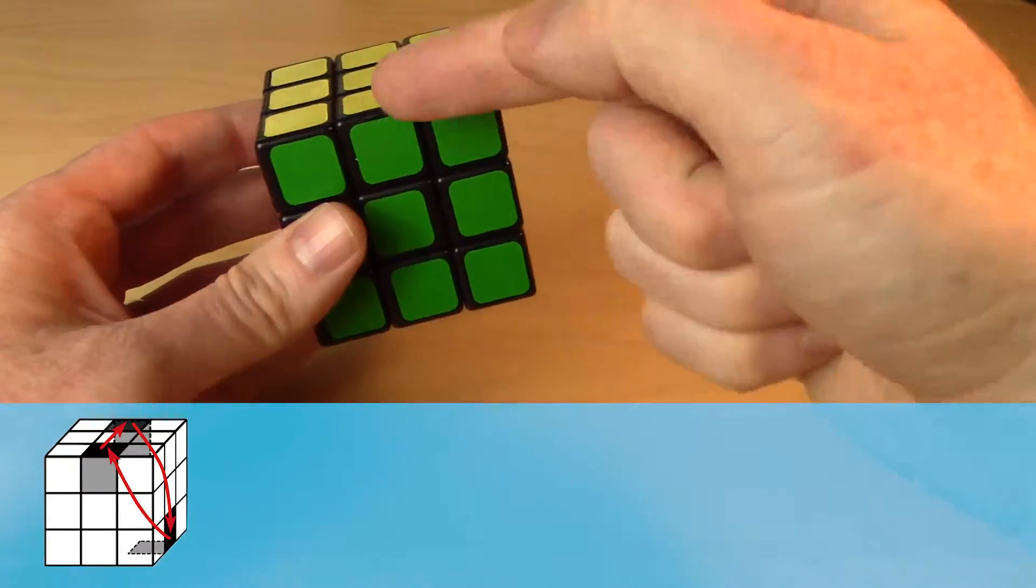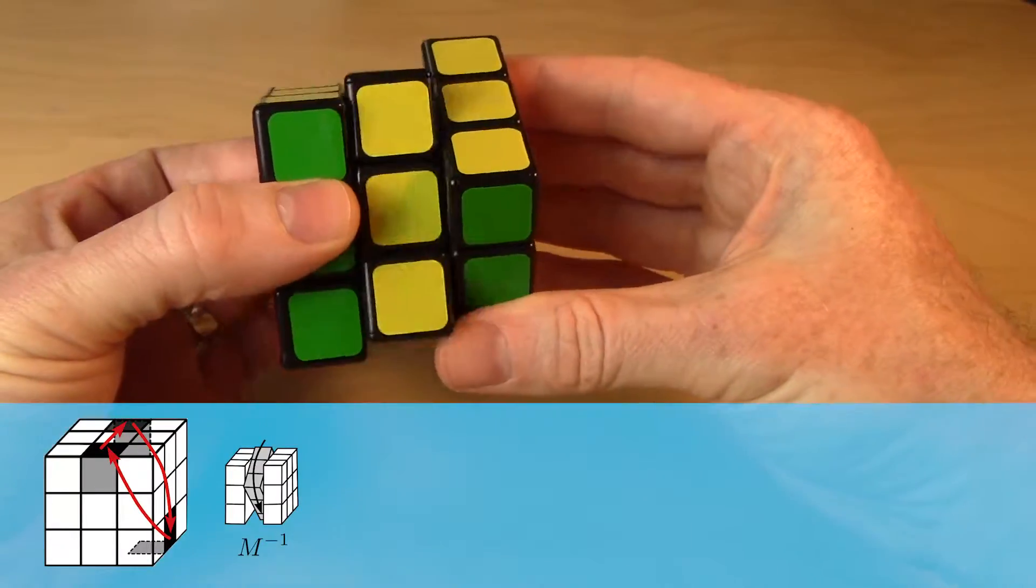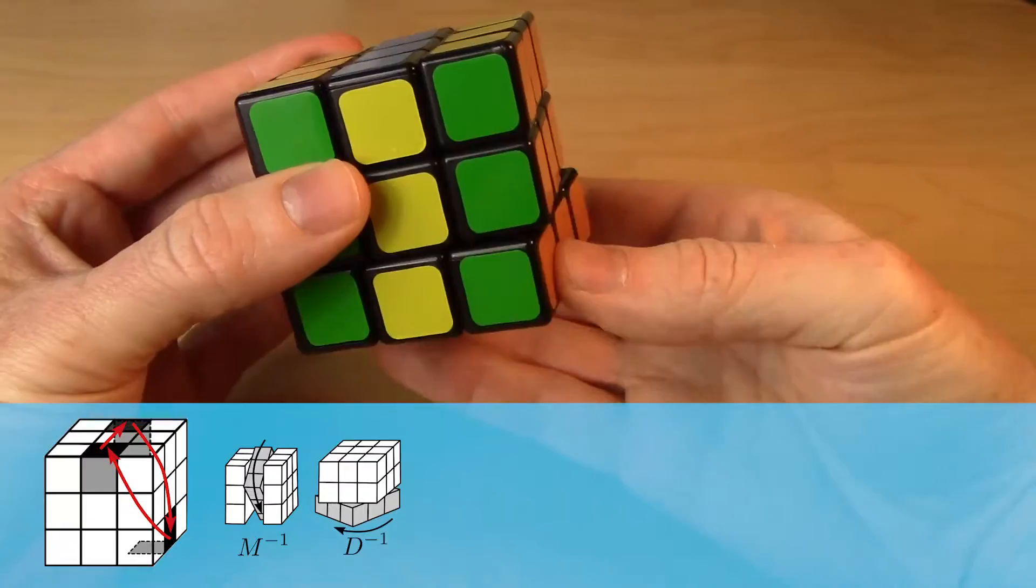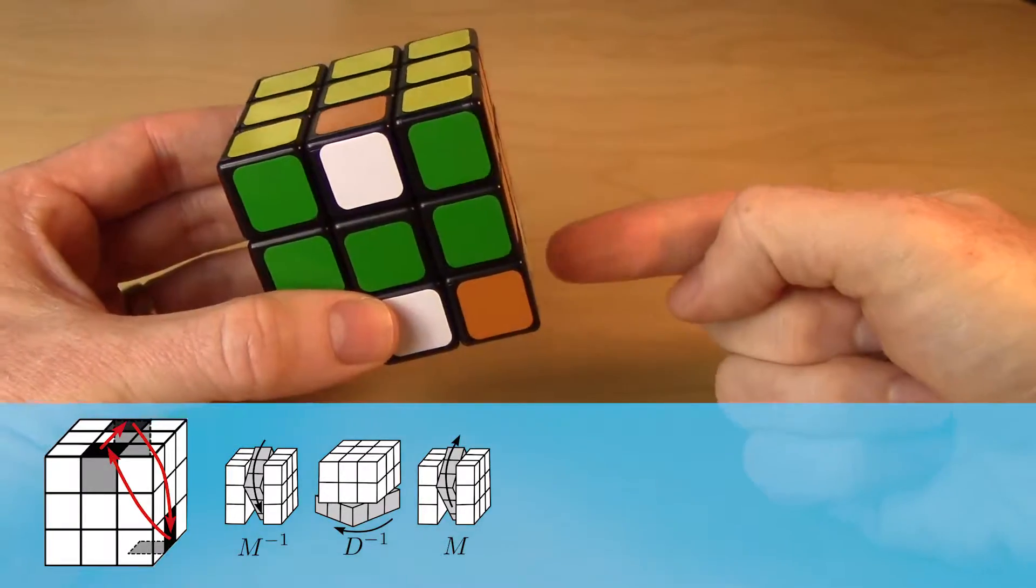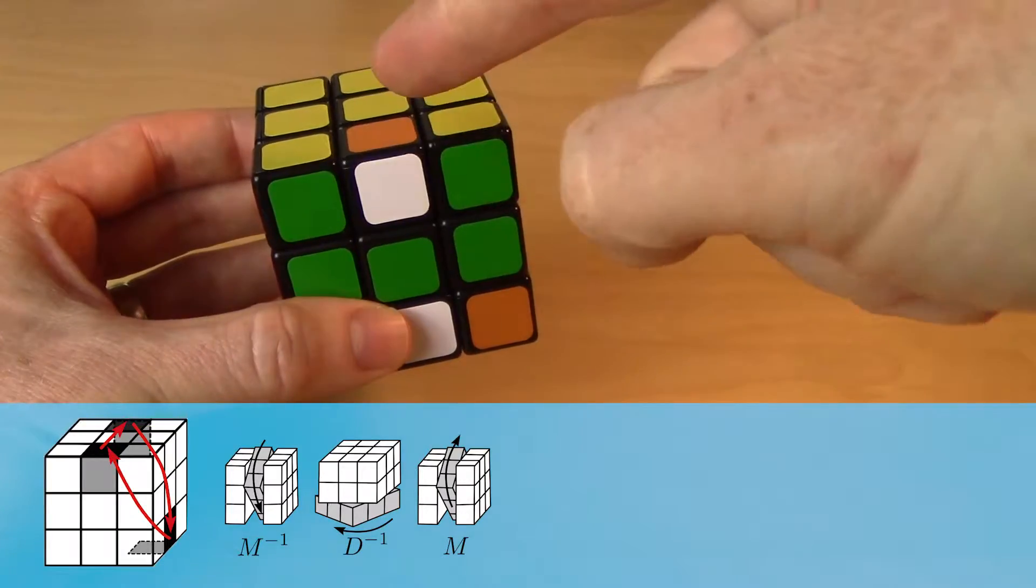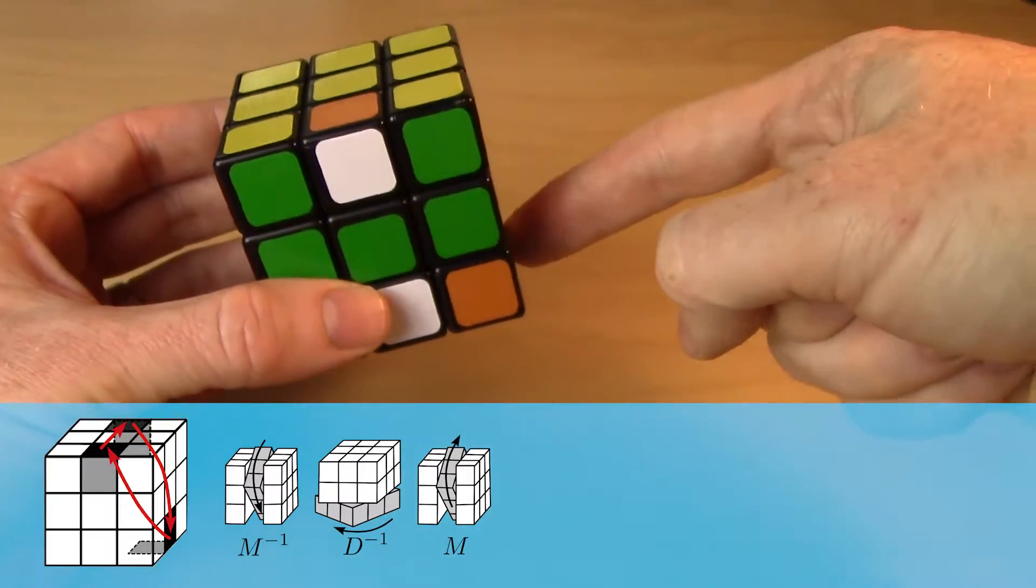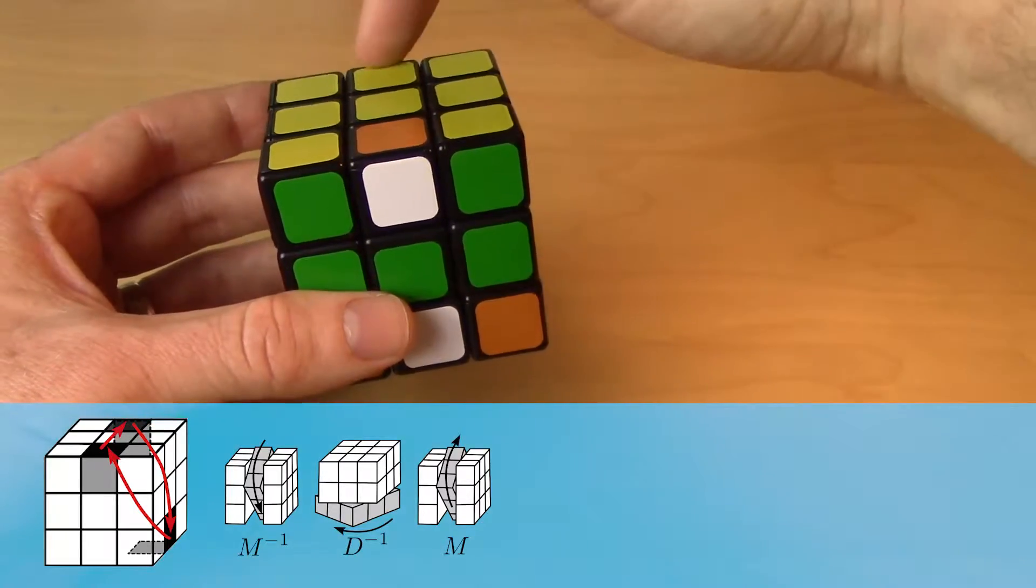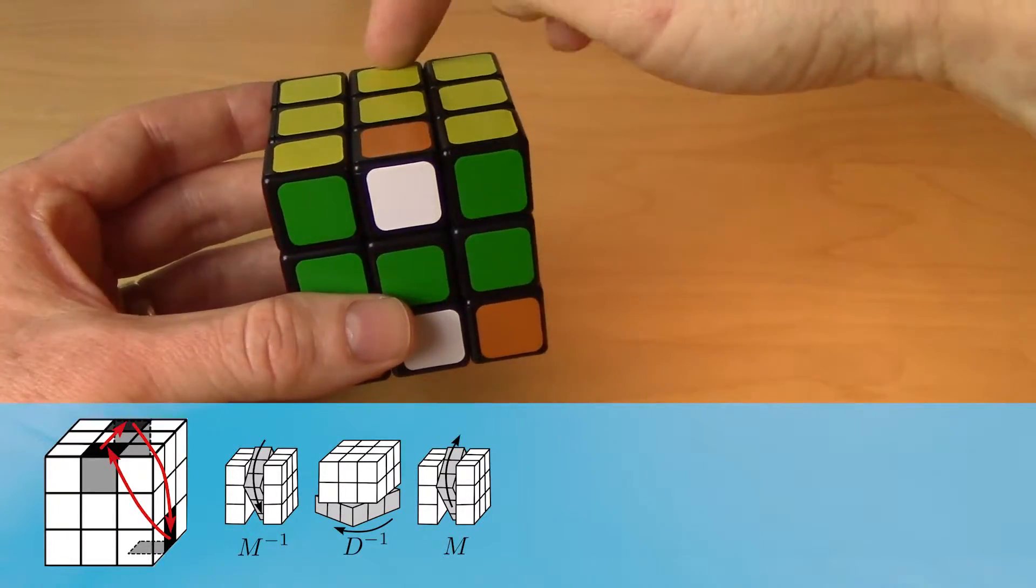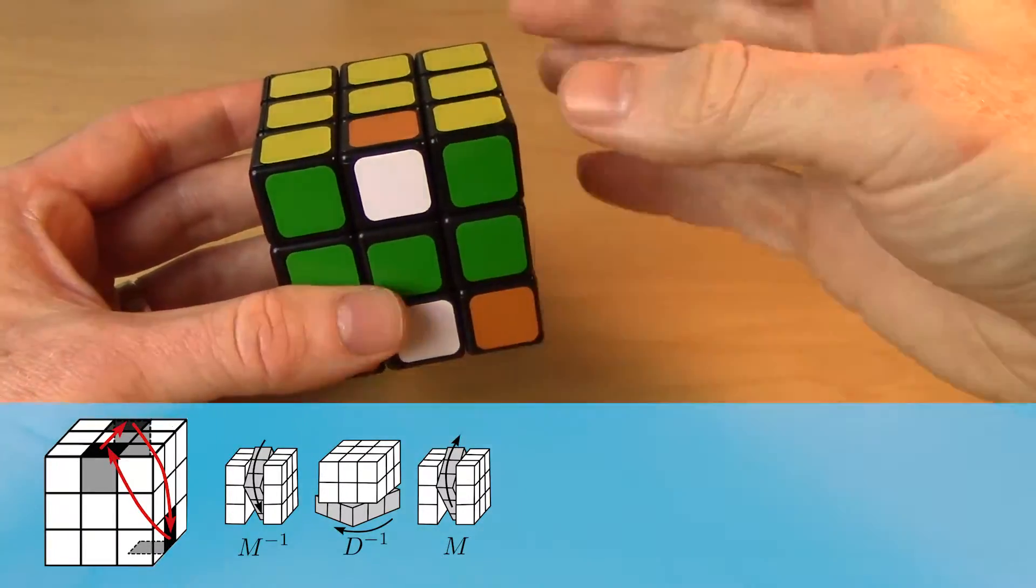And how I'm going to do this is I'm going to send this edge to that spot first. I'm going to use the middle slice to pick it up and send it up there. So it brought that edge piece up here. If I do it in reverse, it'll send that one down here and restore everything in the bottom. So before I do it in reverse, I'll bring this one over there. So it sends that one down there when I reverse that first move.